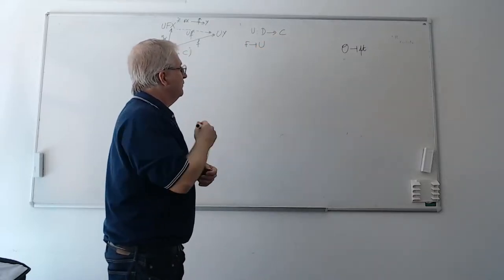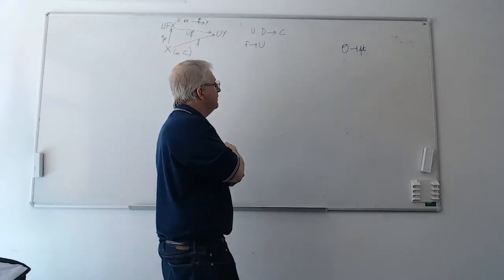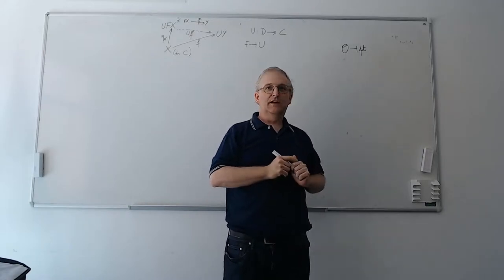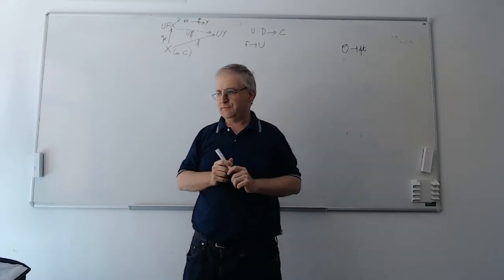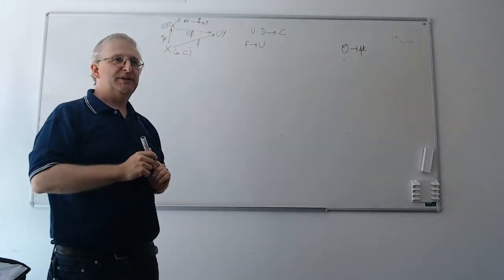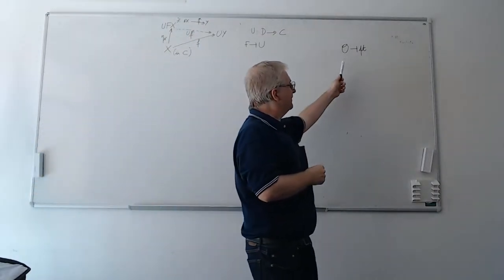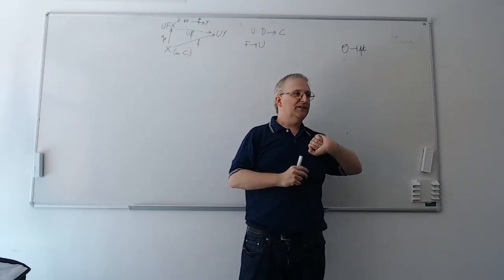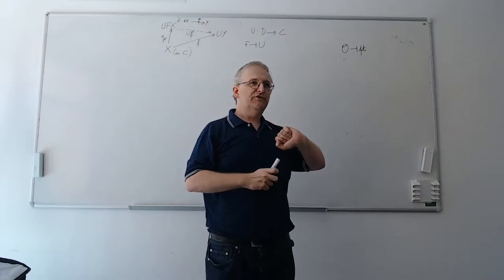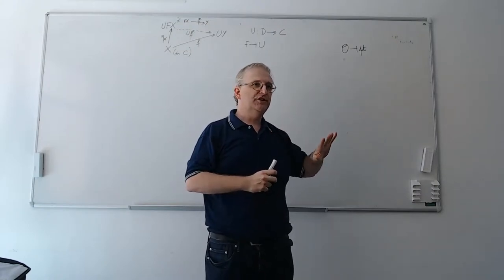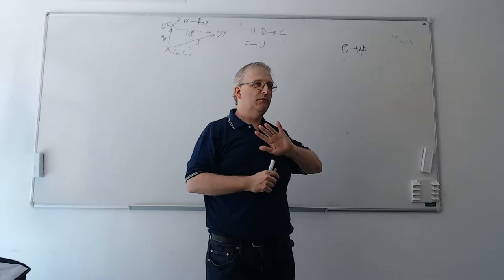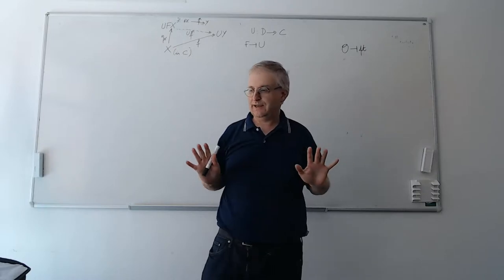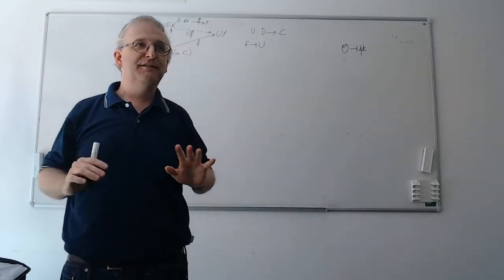Last time I told you that today we're going to see that O is left adjoint to Pt. That's a bit ambitious because it's an adjunction between two categories, and one of these is the op of a category. I probably told you that already, but the op of a category is an extremely simple operation that makes you lose your mind almost instantly. Machines understand that perfectly well, and human beings are completely lost.